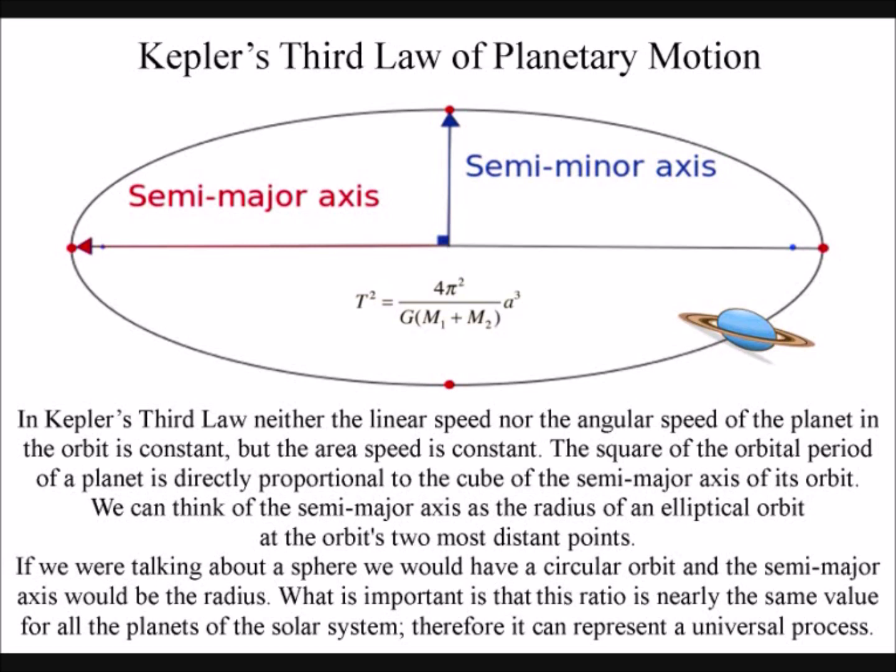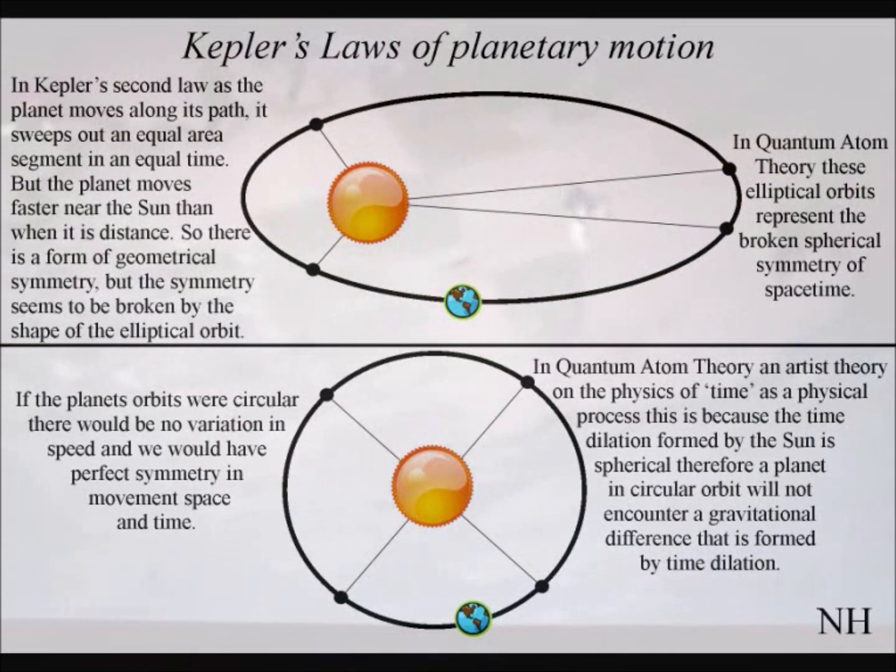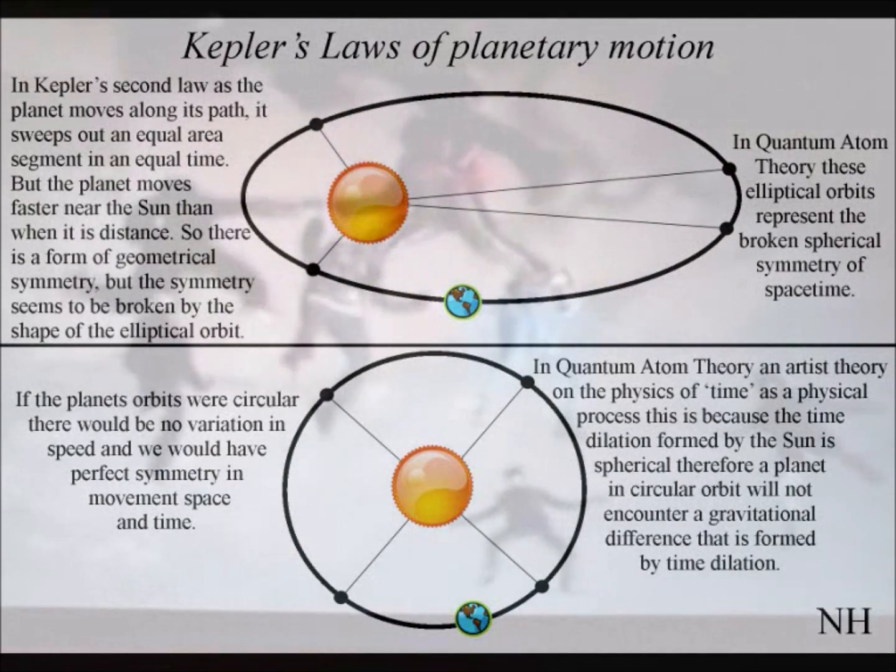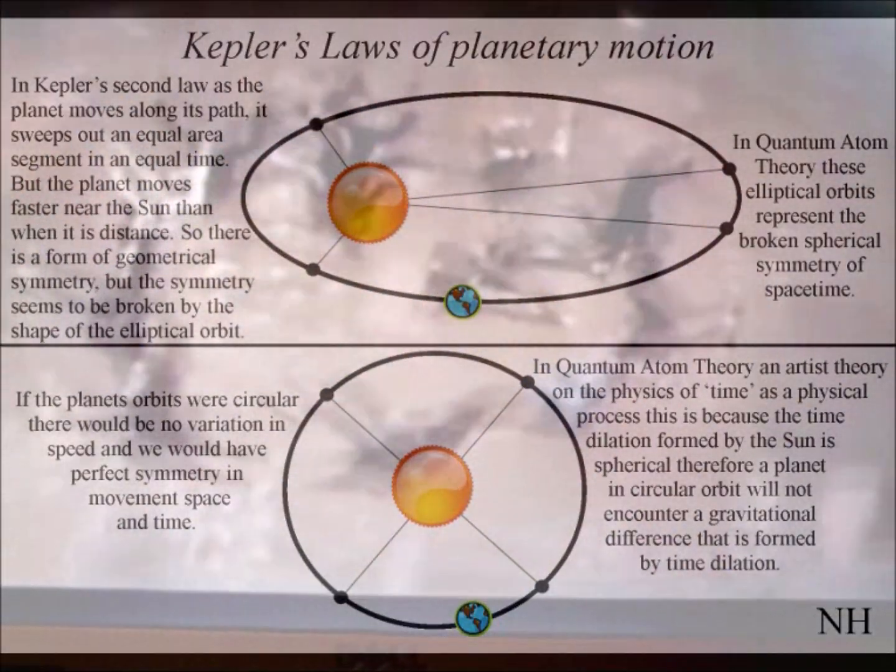We can think of the semi-major axis as the radius of an elliptical orbit at the orbit's two most distant points. If we were talking about a sphere, we would have a circular orbit and the semi-major axis would be the radius. What is important is that this ratio is nearly the same value for all the planets of the solar system, therefore it can represent a universal process.